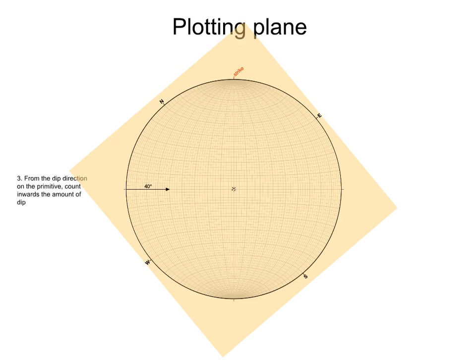From the dip direction of the plane, in this case west, we count the amount of dip from the primitive inwards, in this case 40. We then trace the great circle passing through that point.